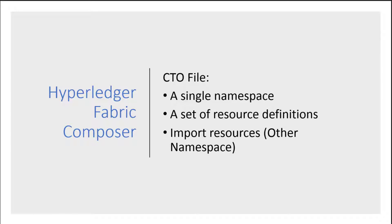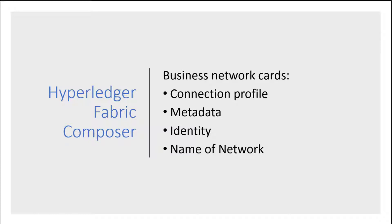A namespace is what you would expect in general IT terms — basically an area where you're going to be working in, where the transactions are going to occur. The system namespace will also include other definitions like registries, identities, and so on. It's a pretty complex subject area. For this exam, you don't need to know too much more than what a CTO is.